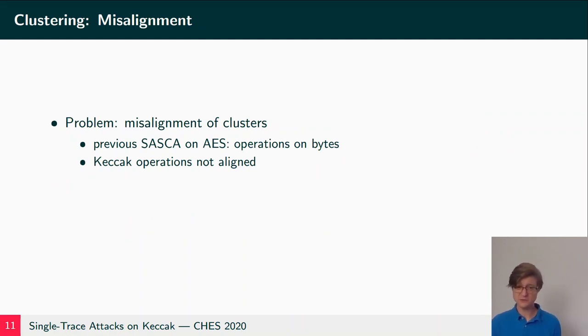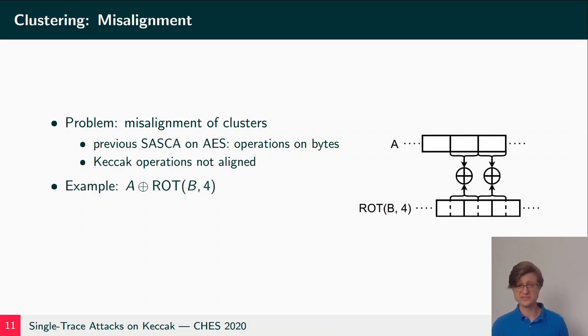Now with this clustering we also run into the problem of misalignment of clusters. So previous works on SASCA on the AES - well, AES is completely byte-wise oriented, so you'll never have any alignment problems. On Keccak however, the operations are not necessarily aligned if you have clusters smaller than 64 bits. For instance, consider this operation where we have a word A that is XORed with a rotated version of a word B.